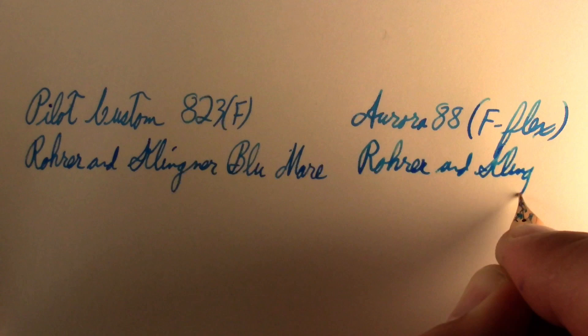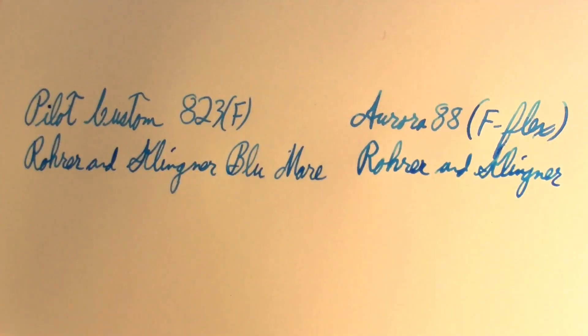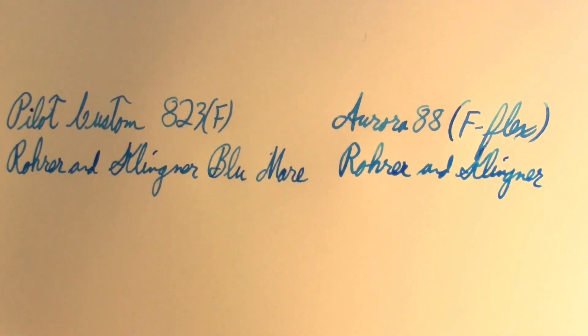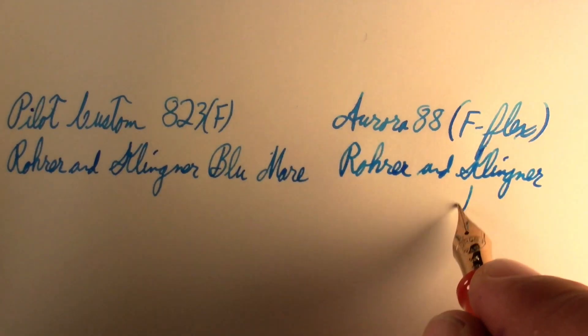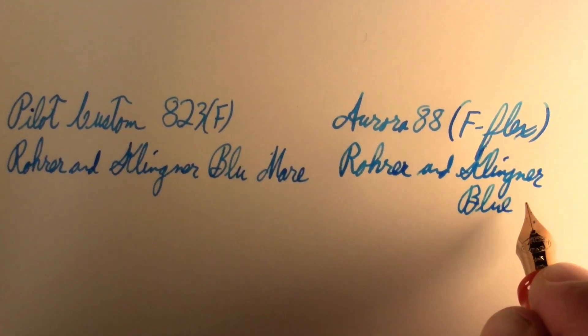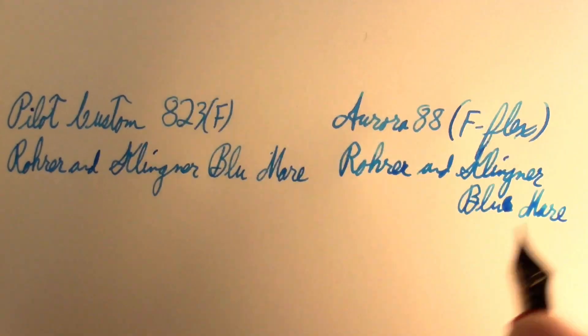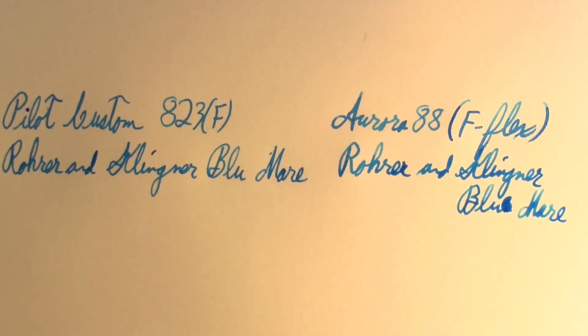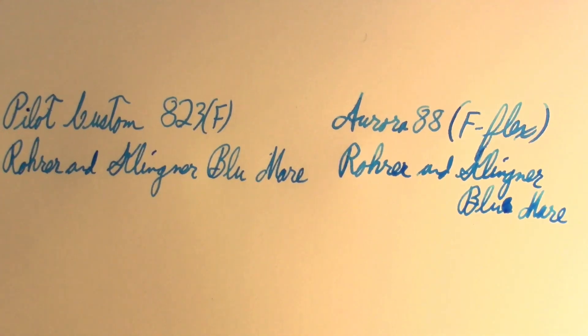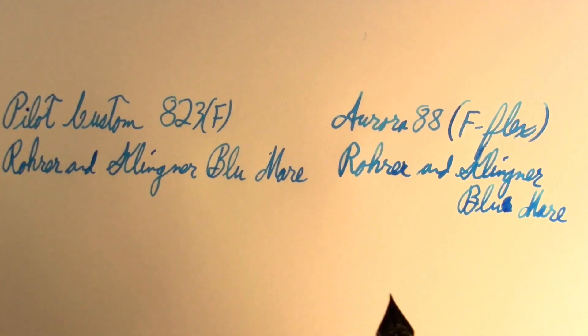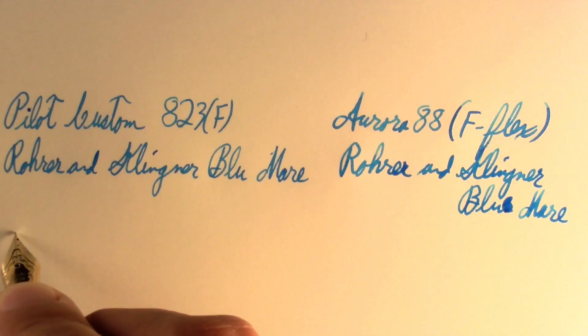So we're putting a German ink in an Italian and a Japanese pen. One thing I'm noticing is there's definitely more feedback on the Aurora 88. Ran out of room on the screen there, so we'll just put it below. We don't have any in blue, English we do, but not in whatever language that's supposed to be. French, don't know. Rohrer and Klingner Blue Mar.